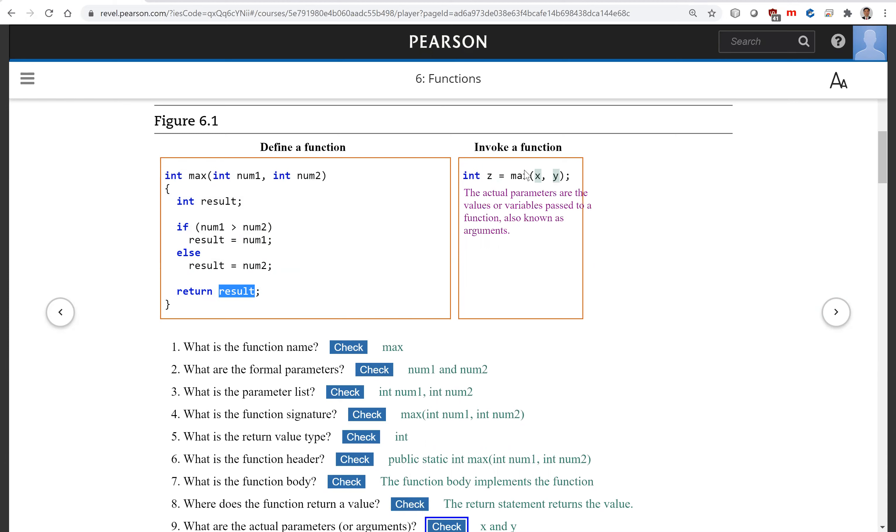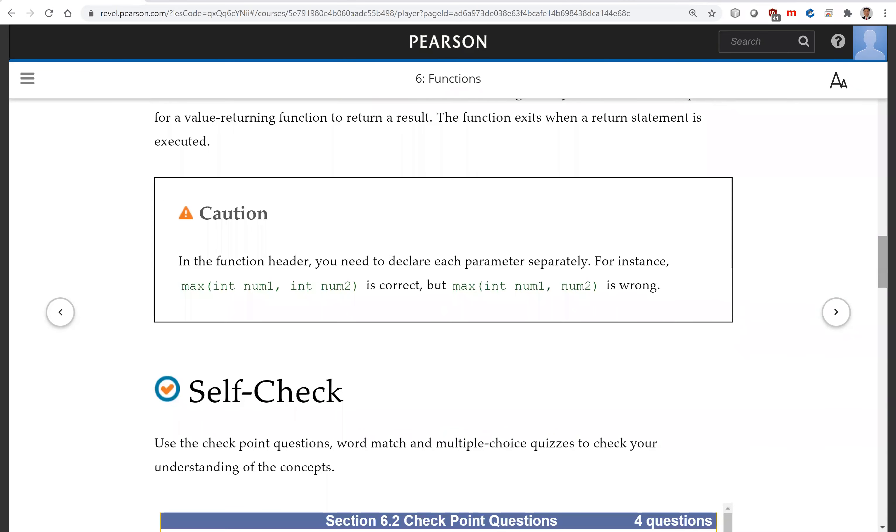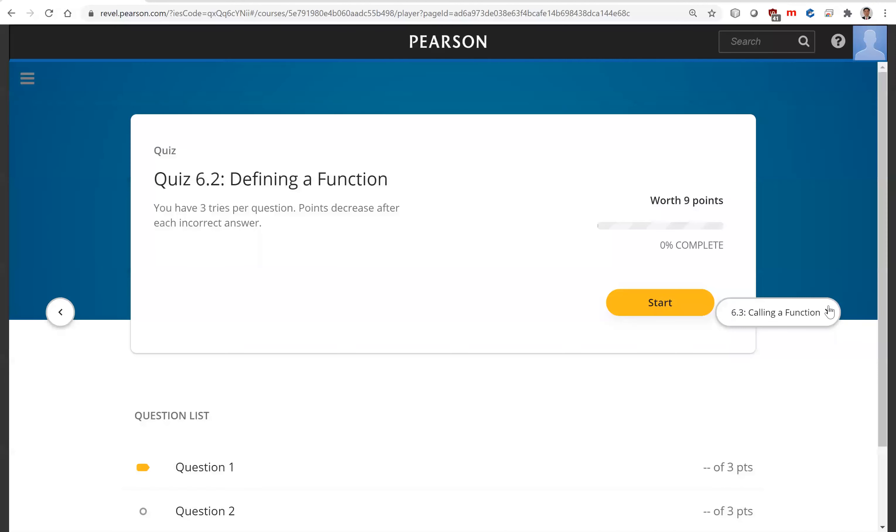And now we're going to call this function here. So you're going to pass the actual value. So this is the actual parameter or called the arguments x, y. You're going to pass the value of x, y to num1 and num2 to invoke the function.